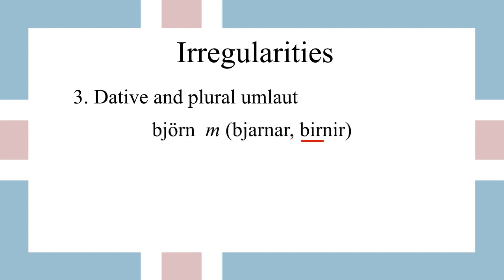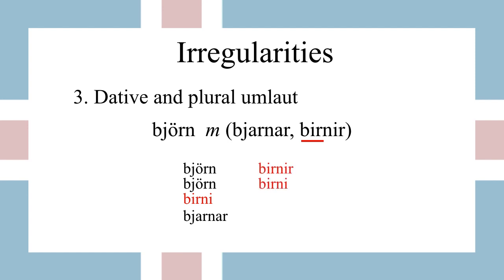One more example: the word 'björn', which means 'a bear'. The plural form is 'birnir' where the -ö- becomes an -i-, and we're going to see that affect the dative. So in the singular: 'björn', 'björn', and 'birni'; and in the plural we have 'birnir' and 'birni'.